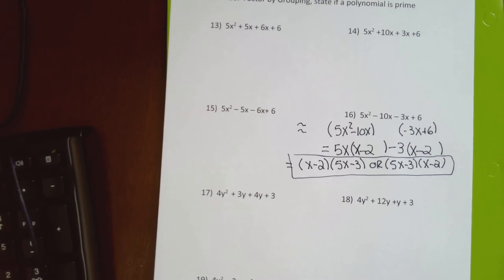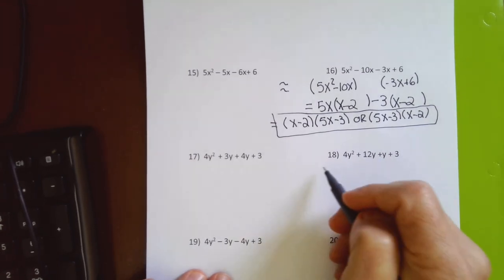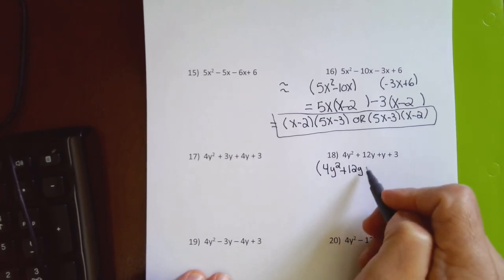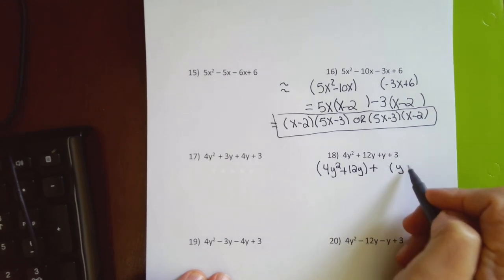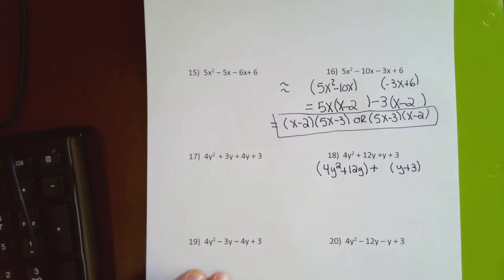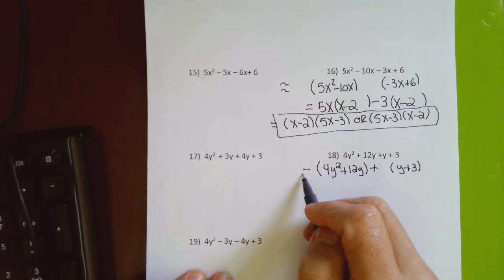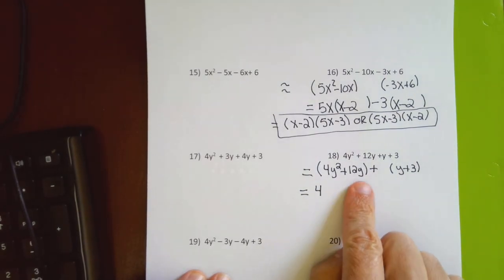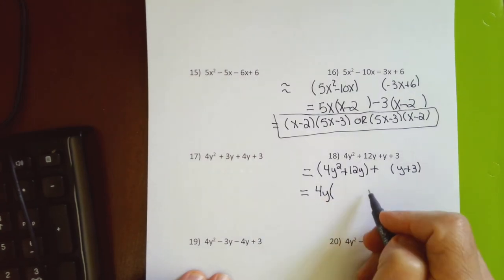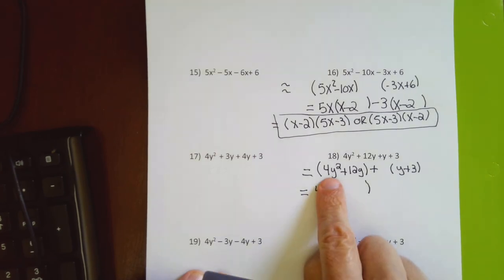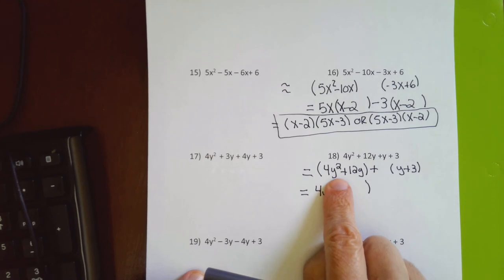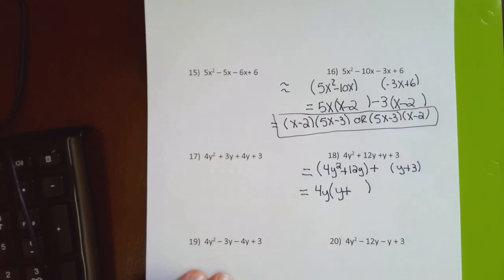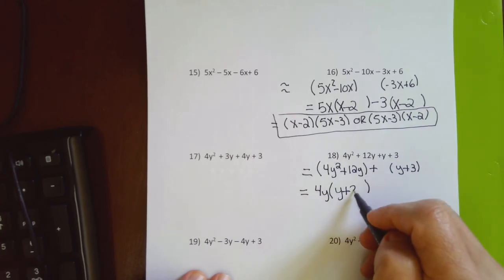Problems 17–20 have a new trick. For problem 18, I put 4y² + 12y in the first parenthesis and 5y + 30 in the second — this really does equal the line above it. The common factor for the first parenthesis is 4y: 4 ÷ 4 = 1, the first term had two y's so I'm left with y, and 12 ÷ 4 = 3 after the plus sign.